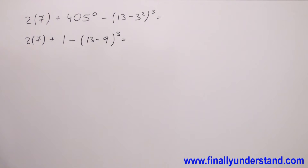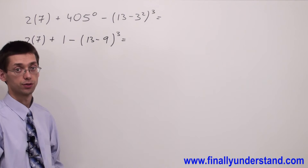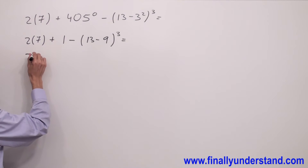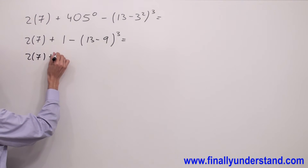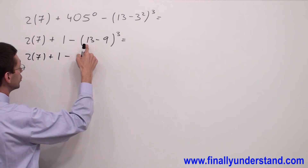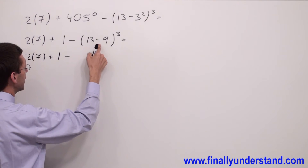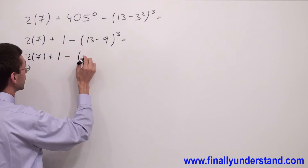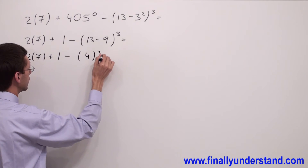Next I'm supposed to perform the operation inside of the parenthesis. So I have 2 times 7 plus 1 minus, and 13 minus 9 is equal to 4, so that gives us 4 to the third power.